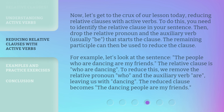Now, let's get to the crux of our lesson today — reducing relative clauses with active verbs. To do this, you need to identify the relative clause in your sentence. Then, drop the relative pronoun and the auxiliary verb, usually 'be,' that starts the clause.